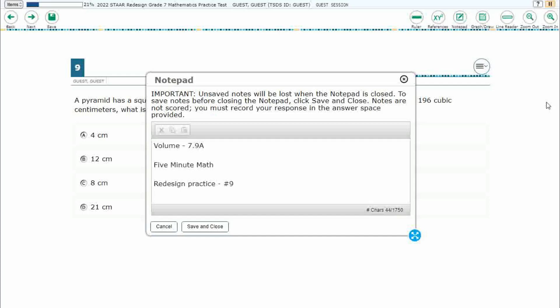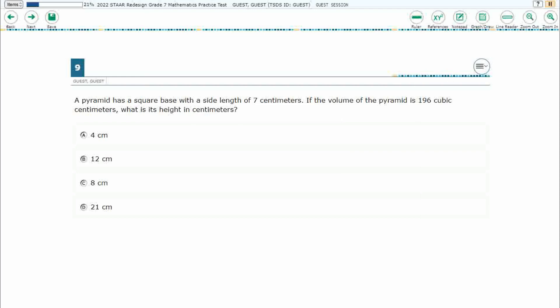Hello and welcome to 5-Minute Math. Today we are looking at the 7th grade concept of volume. This is standard 7.9a in the great state of Texas, and we are using item number 9 of the Redesign Practice Online Star Test.